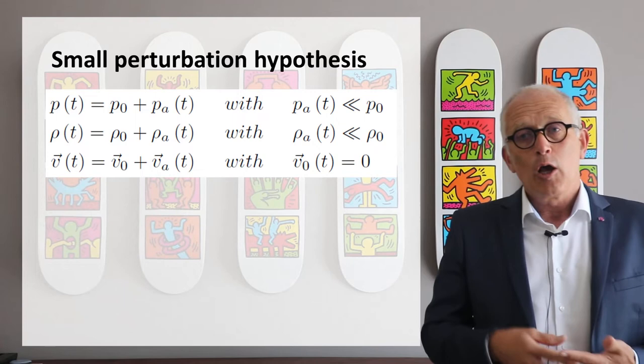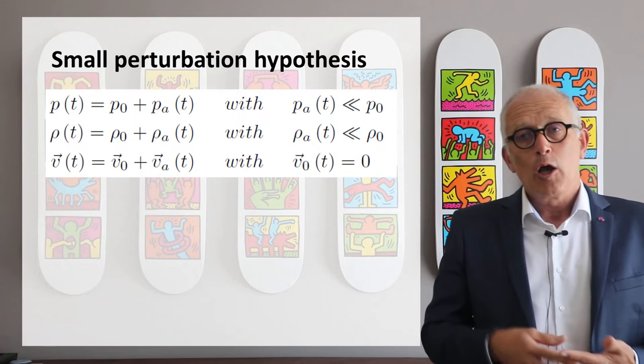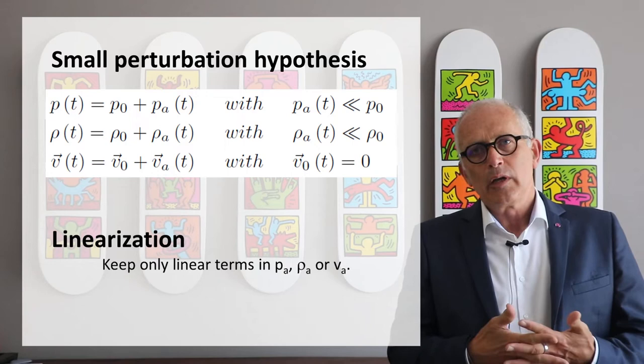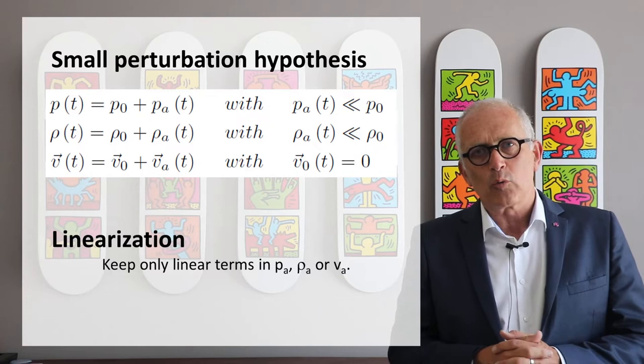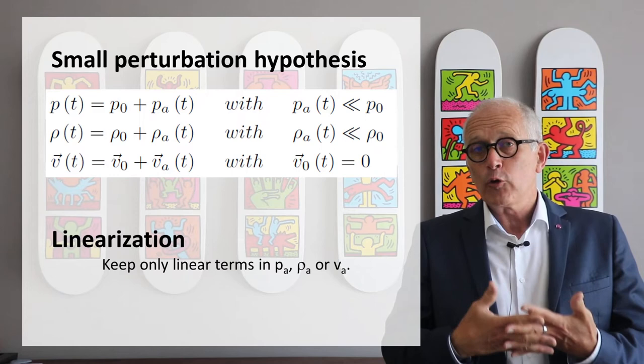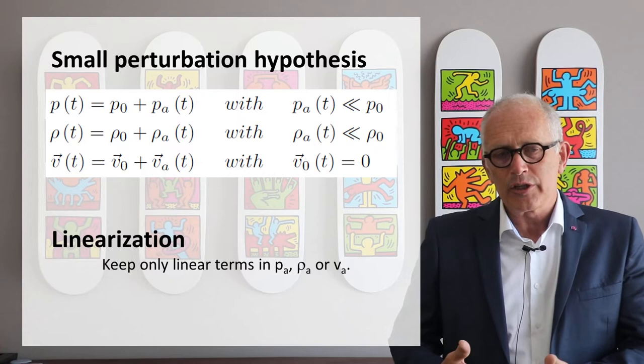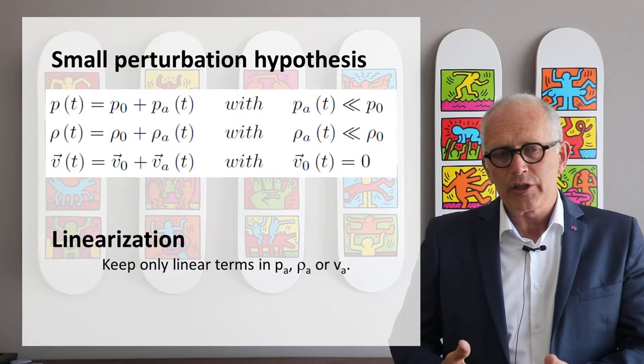If we take that decomposition and feed it into the continuity equation and momentum equation, that I also call Euler's equation, and you do some math about that, and then you linearize the equations. So you only keep the first order terms in pressure, density and velocity fluctuations. If you do all that, you end up with a set of linear partial differential equations.